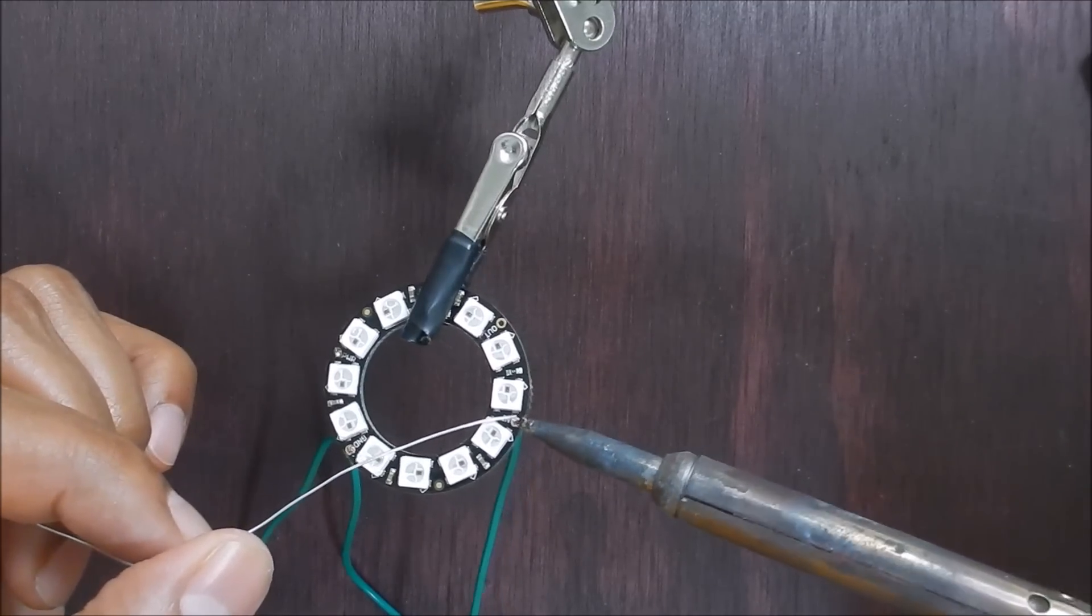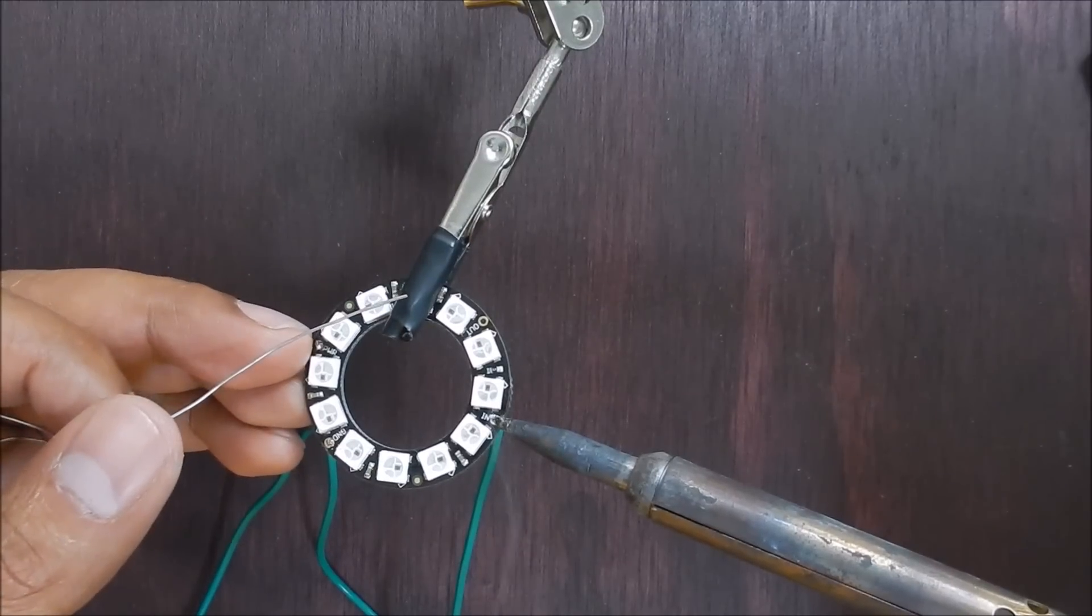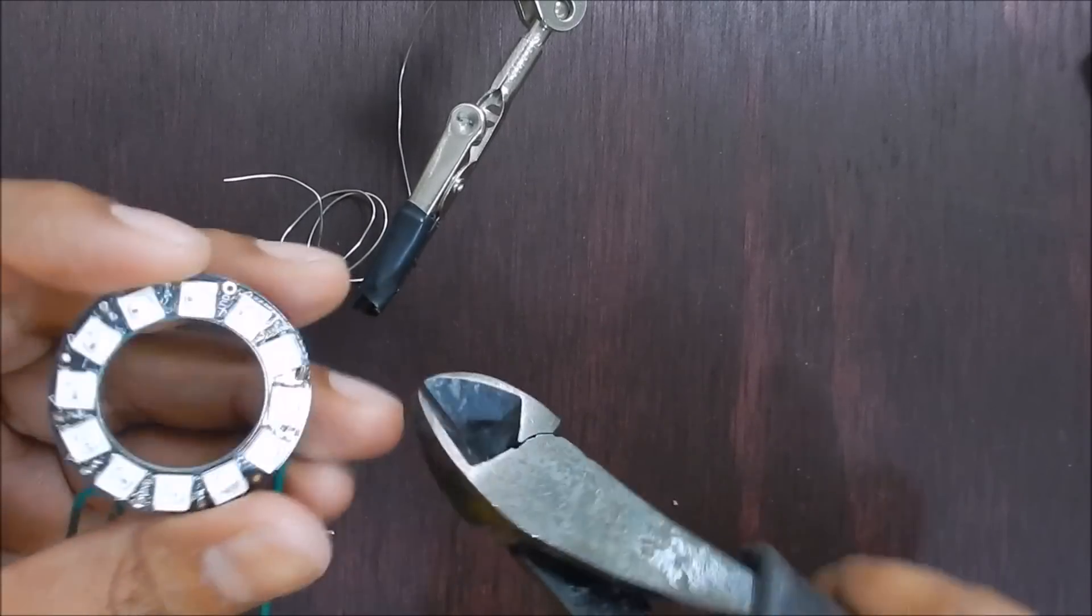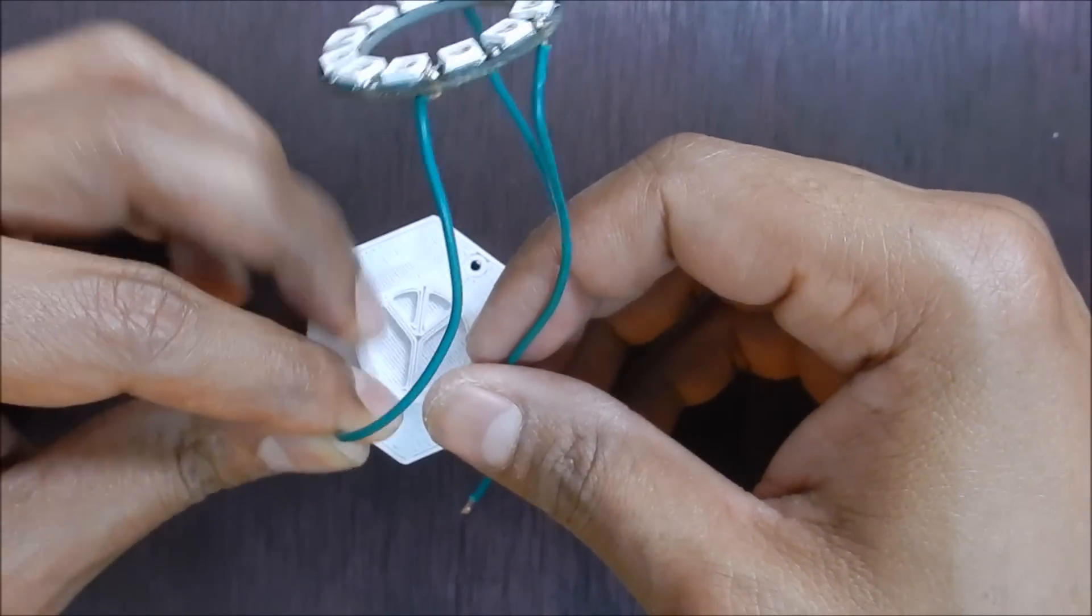Solder some short lengths of wire to the NeoPixel ring. Insert the wires through the holes in the front of the enclosure and seat the NeoPixel ring.